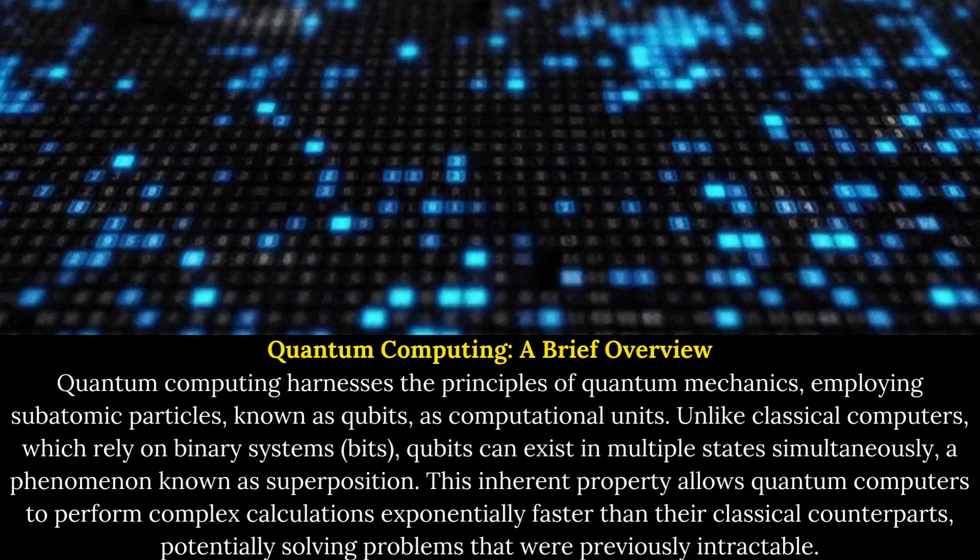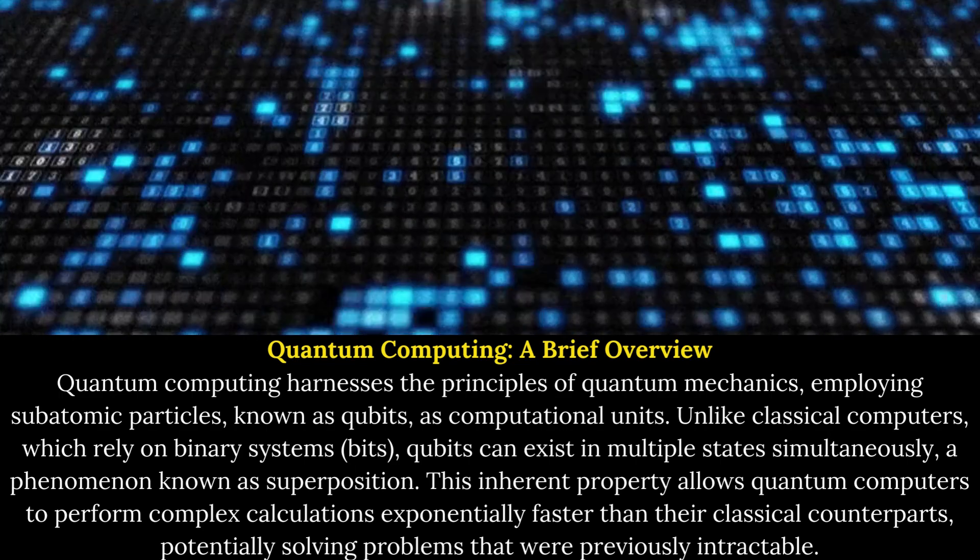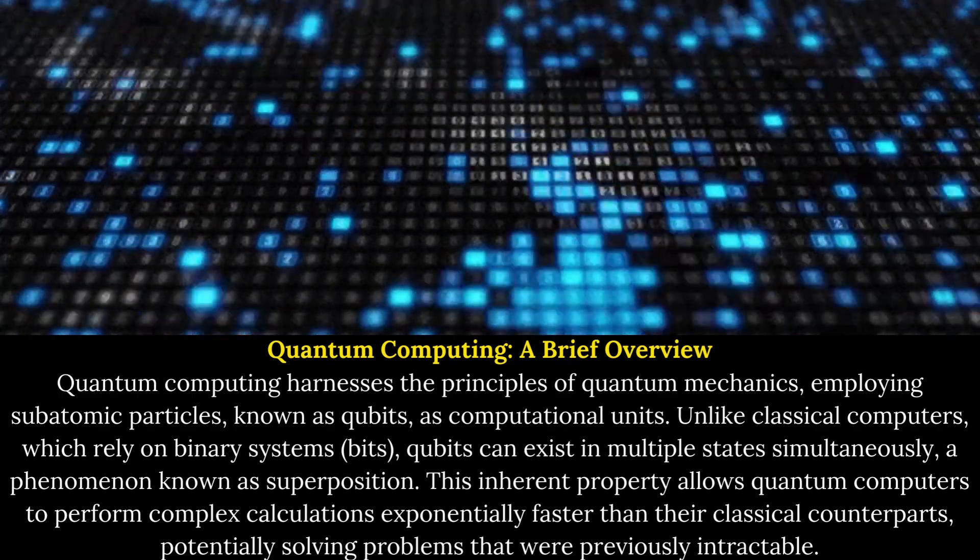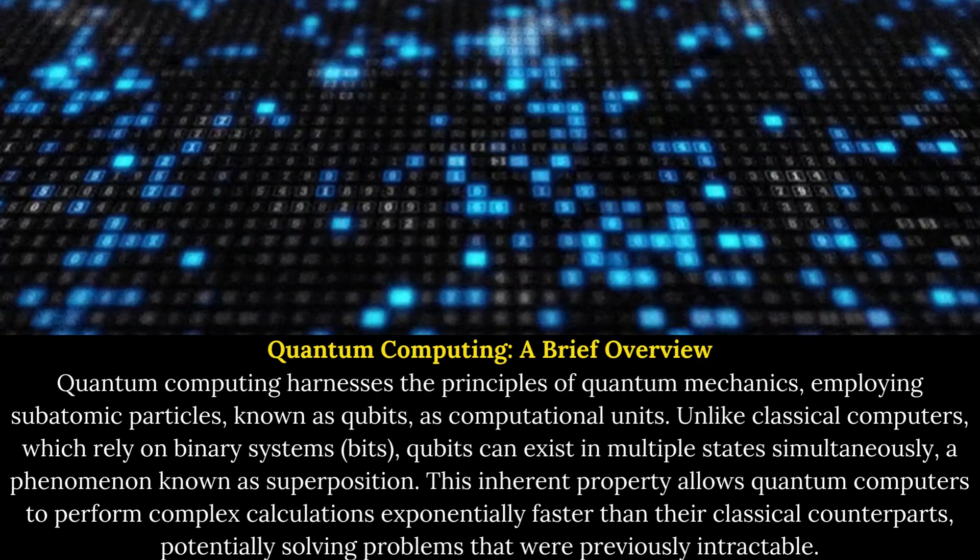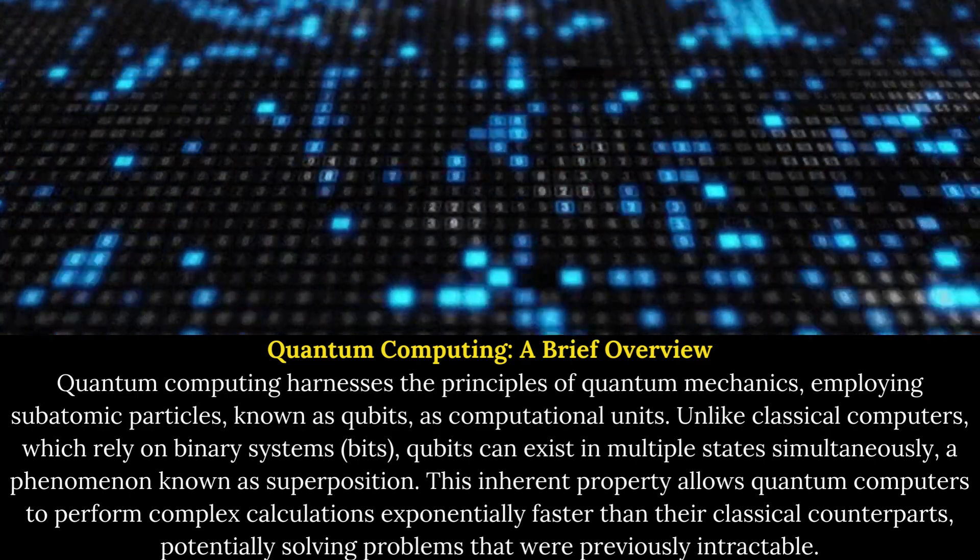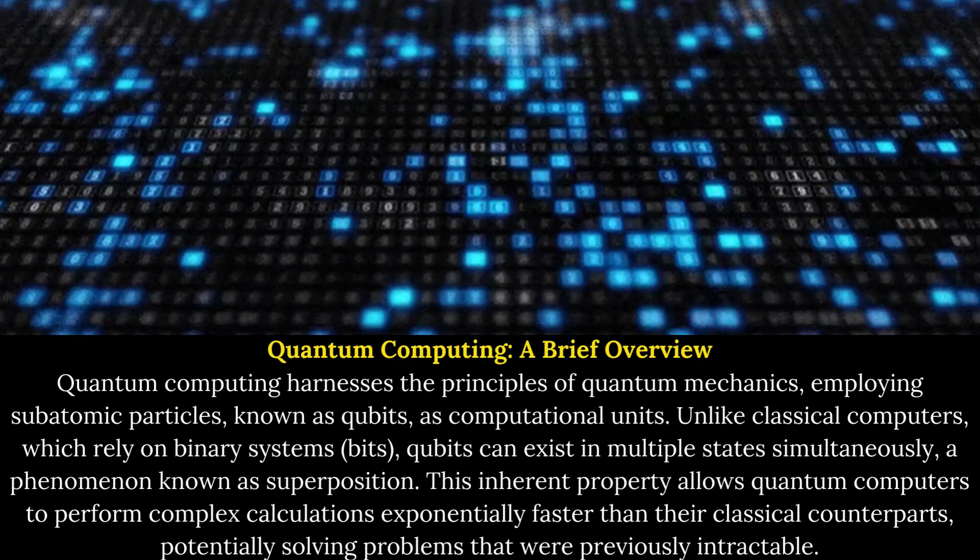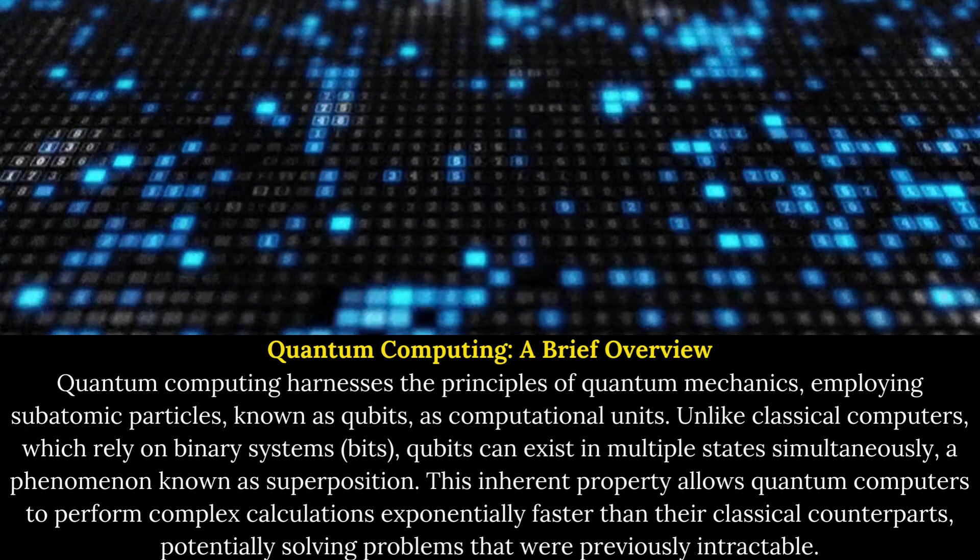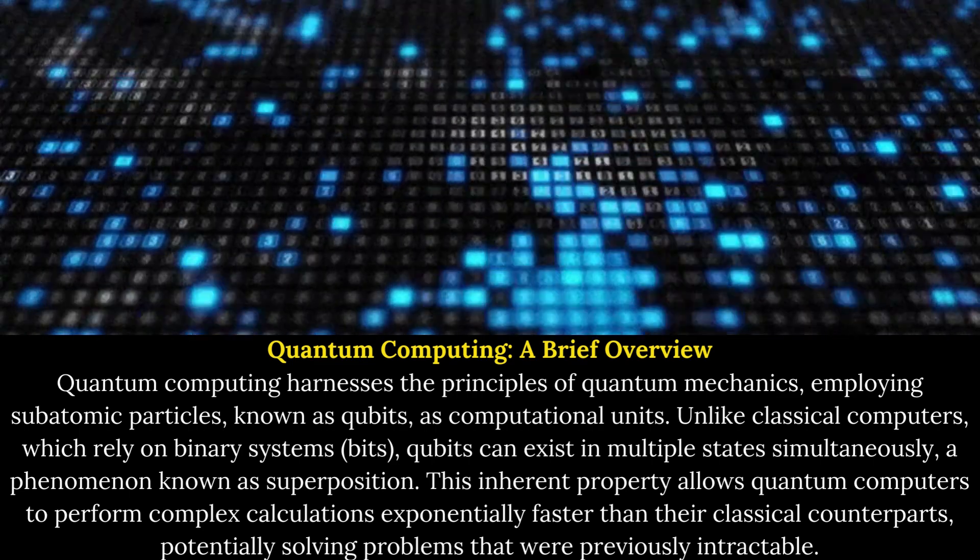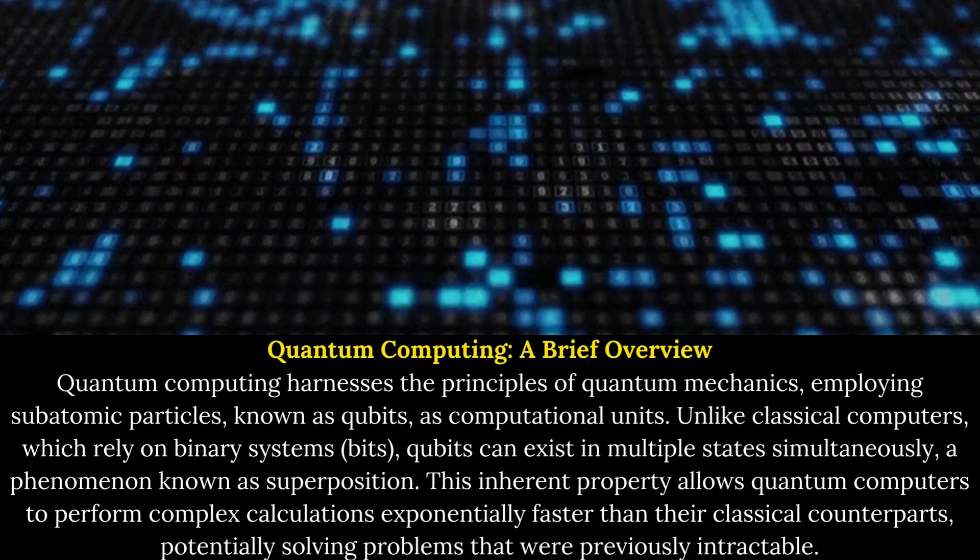Unlike classical computers which rely on binary systems (bits), qubits can exist in multiple states simultaneously, a phenomenon known as superposition. This inherent property allows quantum computers to perform complex calculations exponentially faster than their classical counterparts, potentially solving problems that were previously intractable.